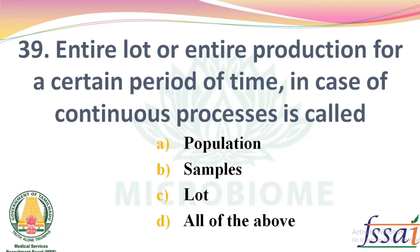Entire lot or entire production for a certain period of time, in case of a continuous process, is called — Options: Population, Samples, Lot, All of the above. The right answer: Option A, Population.